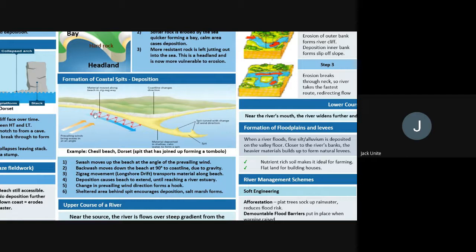Longshore drift moves material from one part of the beach to the other end over time. When the prevailing wind changes direction or stops, deposition occurs where energy is insufficient to keep material moving, and our spit starts to build up. The wind can also change the shape of the spit, creating a recurved spit. With an estuary — a river flowing down into the lower course — that river hits this barrier, loses energy, deposits material, and can create salt marshes and mud flats behind the spit.